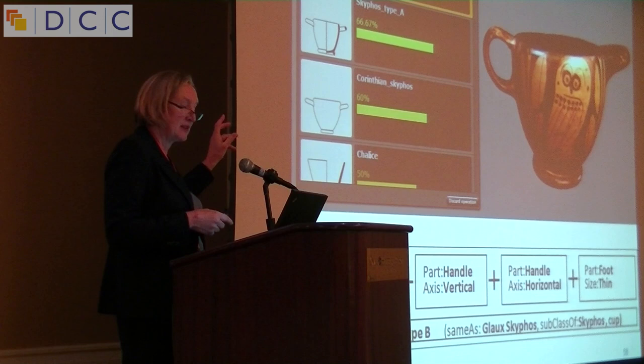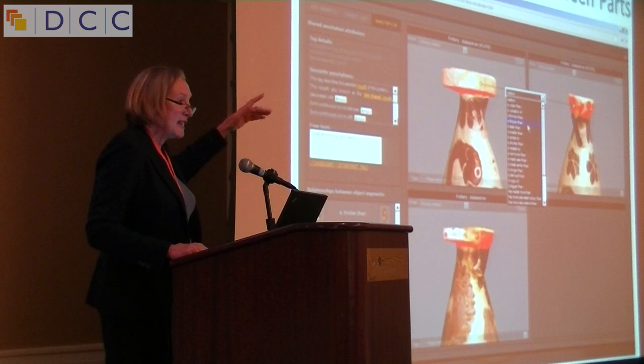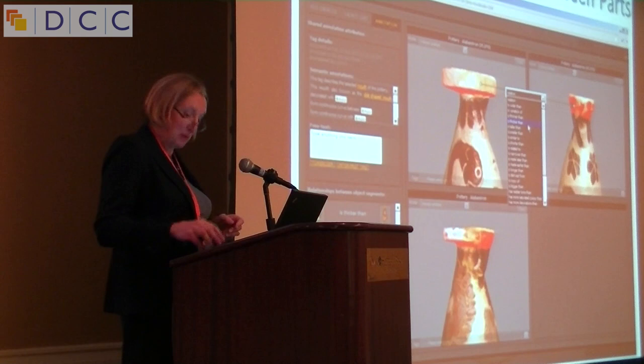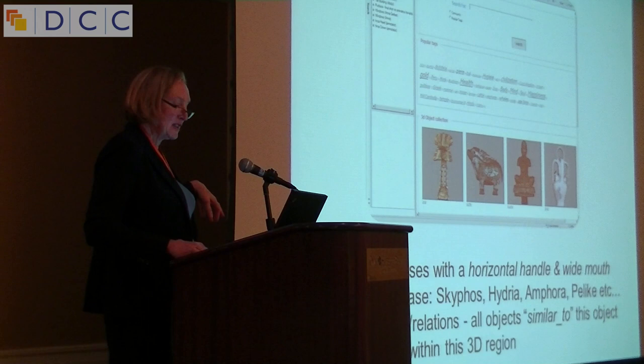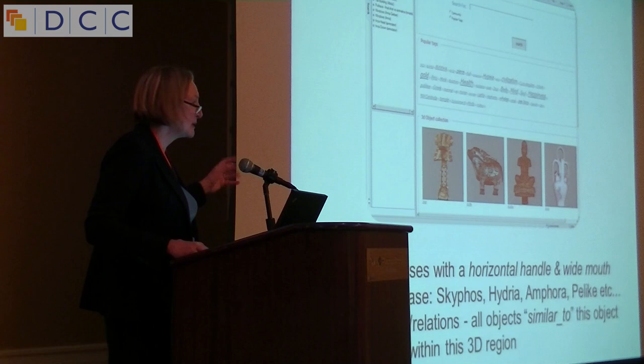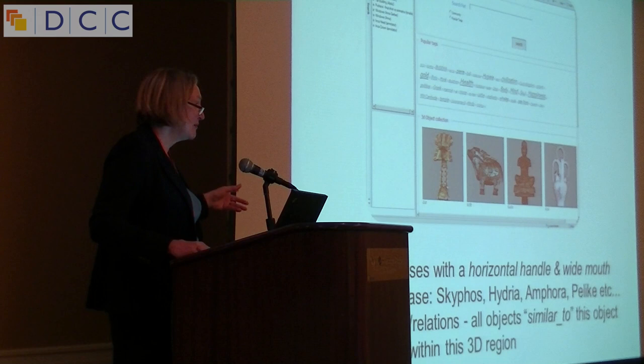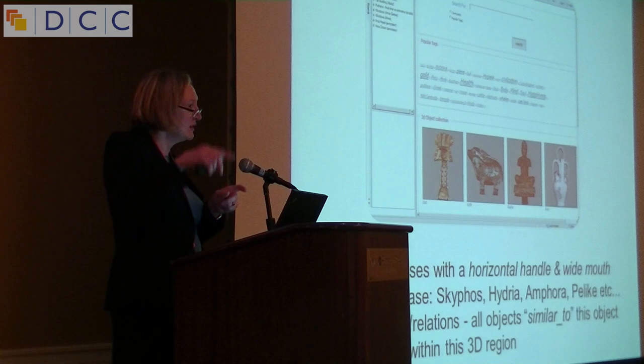The same tool allows you to annotate relationships between parts and vases, which is very helpful for the community because they need to do comparative analysis. With this tool you can do advanced searches: find all vases with a horizontal handle and wide mouth, search for objects based on parts, search for types of vases, search for associations — give me all objects similar to this one — and you can also define 3D regions and find all annotations that occur in that region. It's spatial searching.